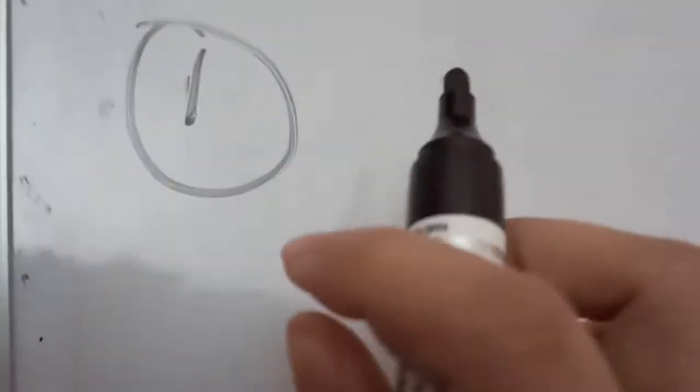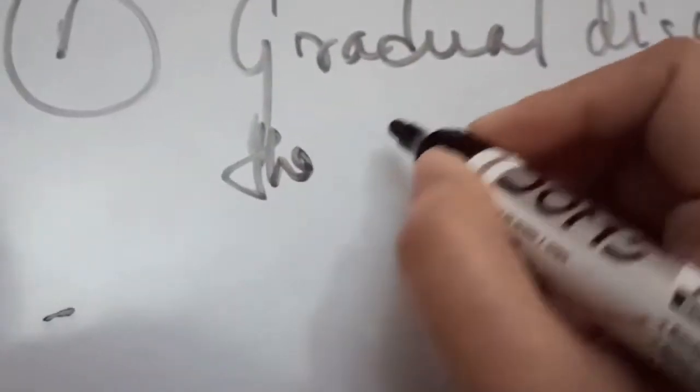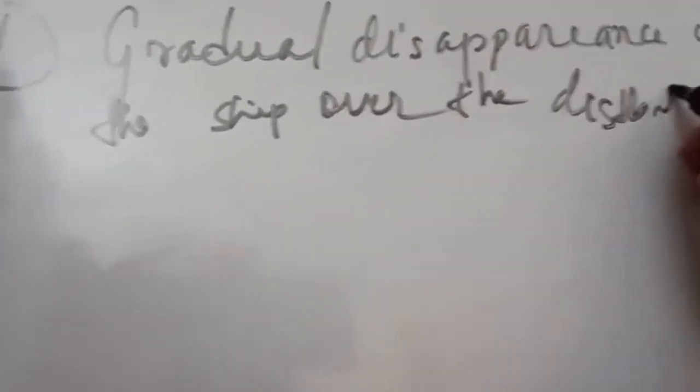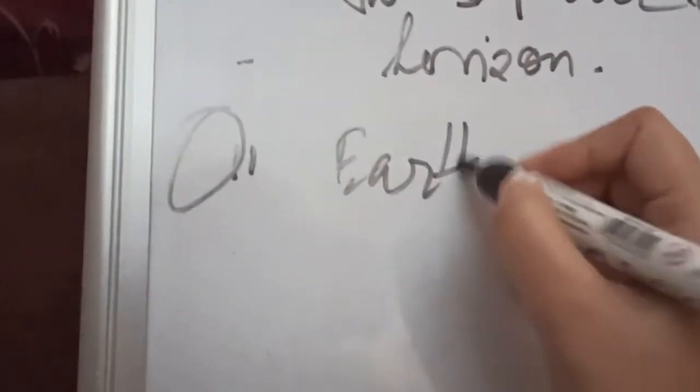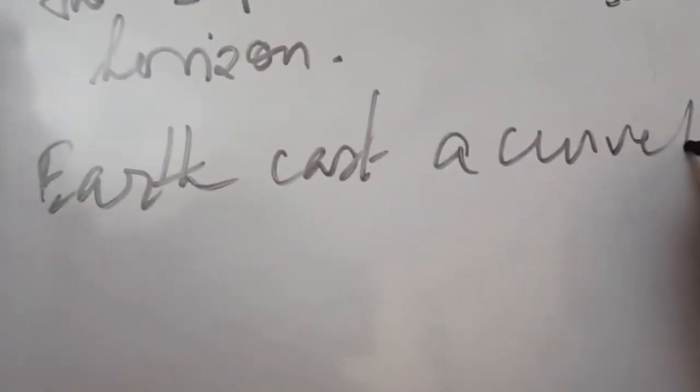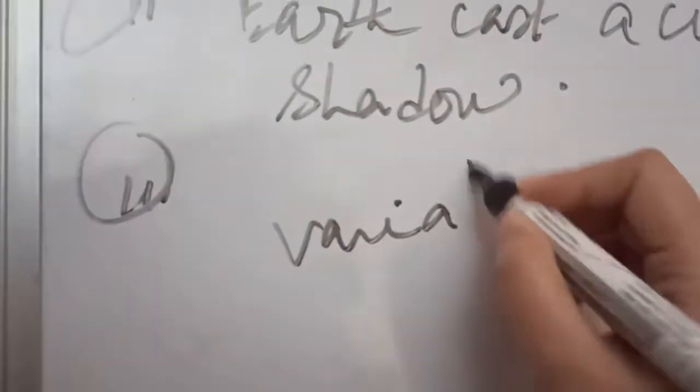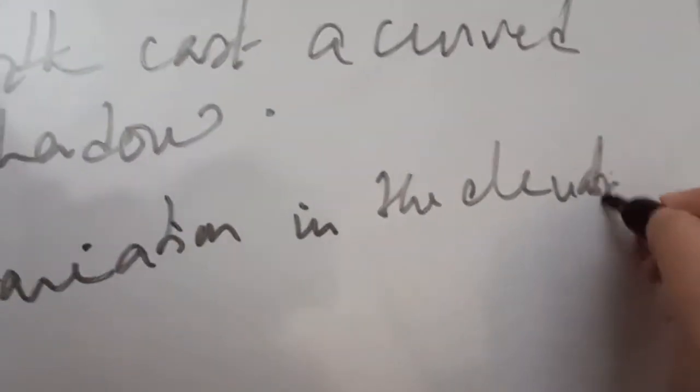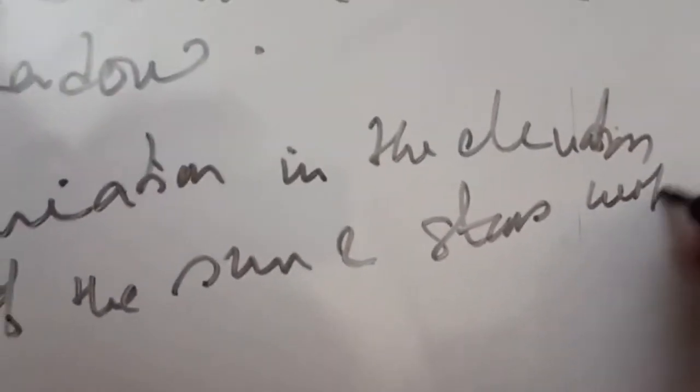Aristotle gave this declaration based on three observations. First one is the gradual disappearance of ships over the distant horizon. Number two is that the Earth casts a curved shadow. The third observation is the variation in the elevation of the sun and stars with latitude.